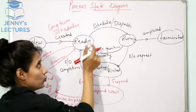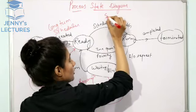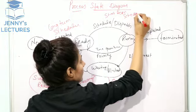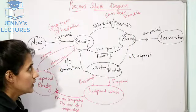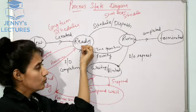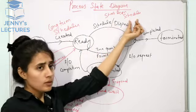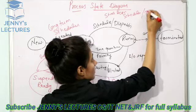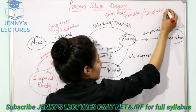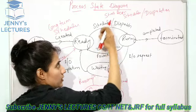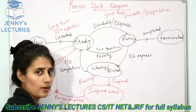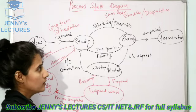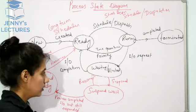From the ready state, a process is picked and the CPU is allocated to it — this is done by the short-term scheduler. The short-term scheduler decides which process to pick and calls the dispatcher. The dispatcher is a software component that picks the process from the ready state, allocates the CPU, and puts the process into the running state.